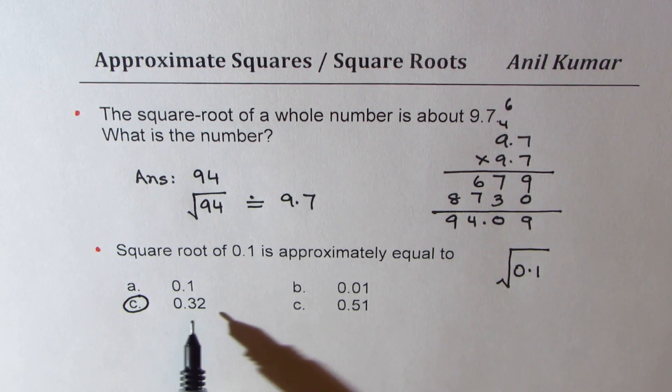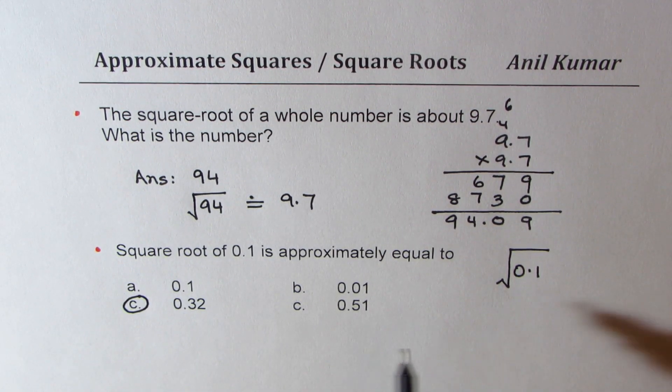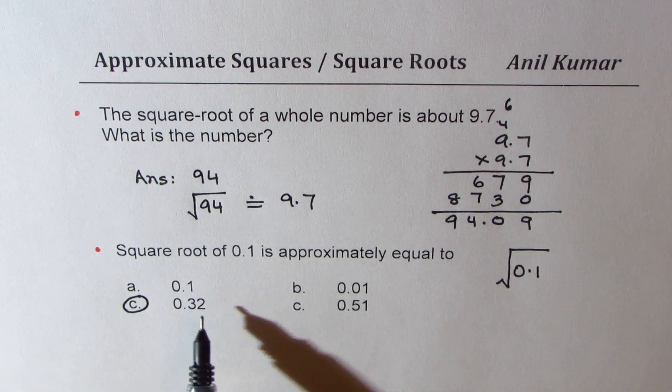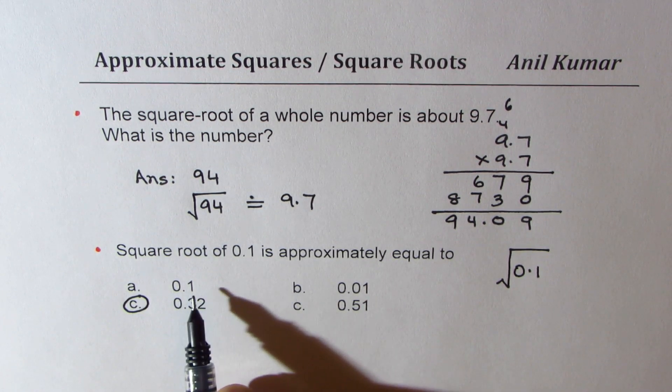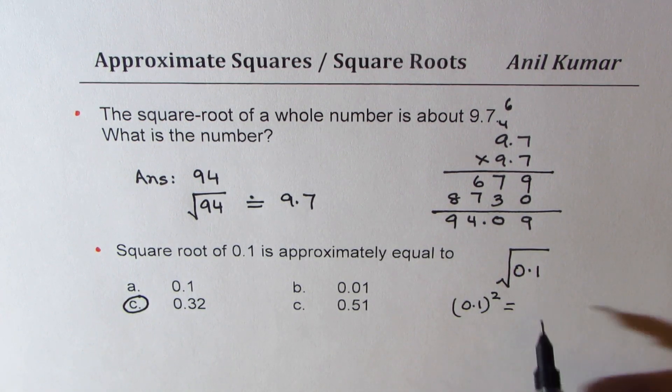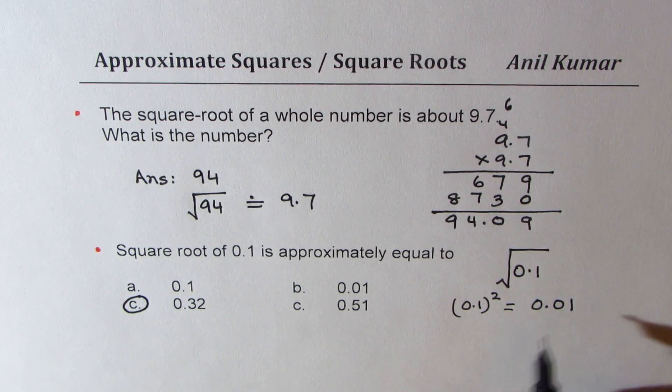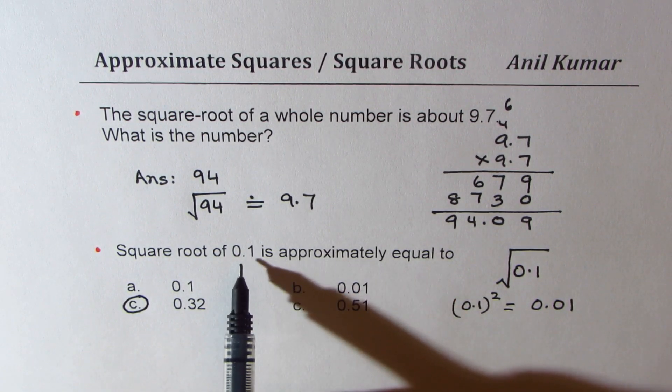So that is 0.09 since we have a decimal here. You should remember that if I do 0.1 squared, what do I get? 0.1 squared is actually equal to 0.01. That's a very small number, nowhere close to 0.1.